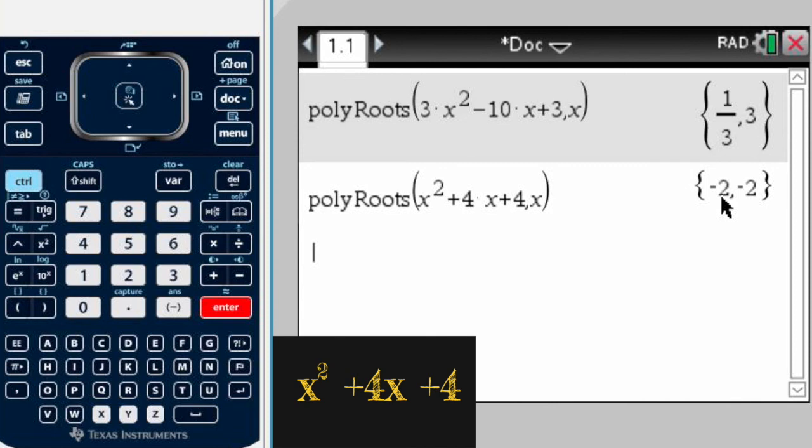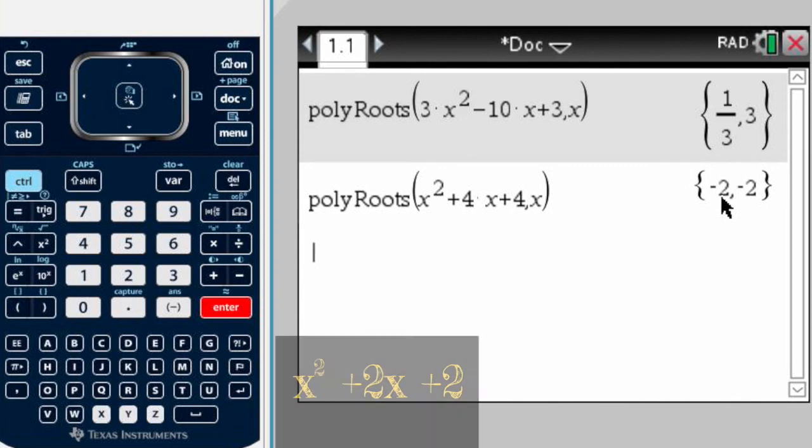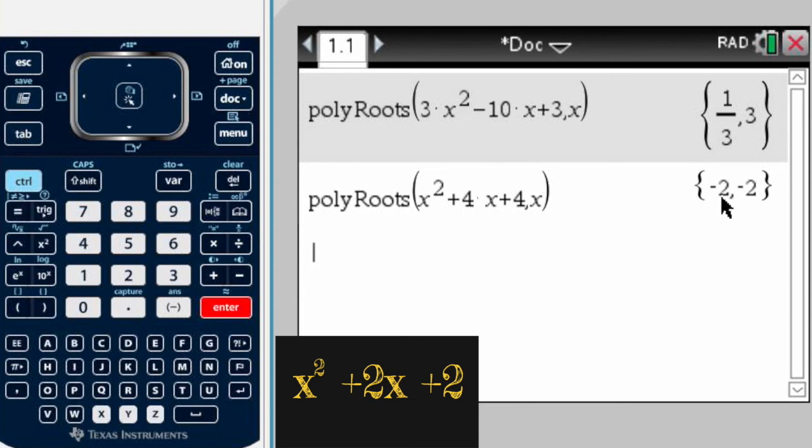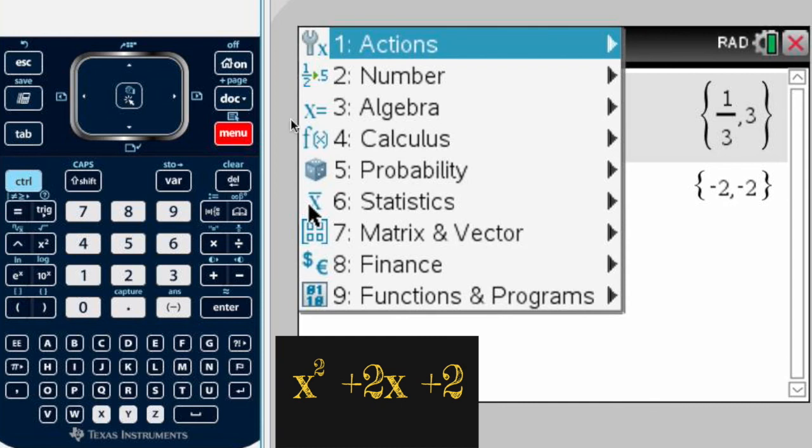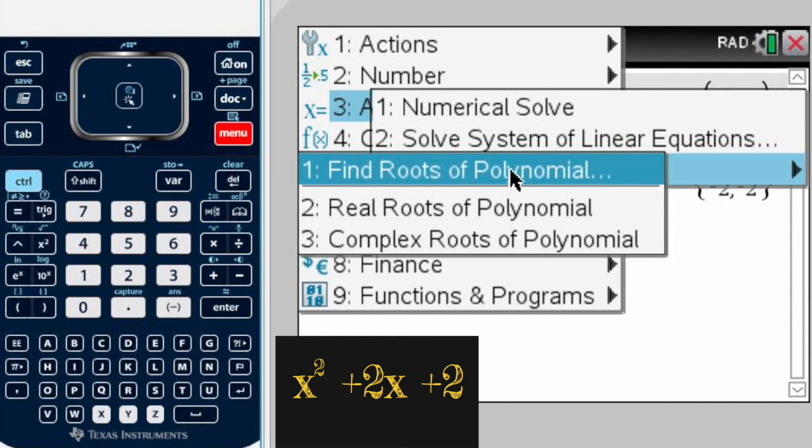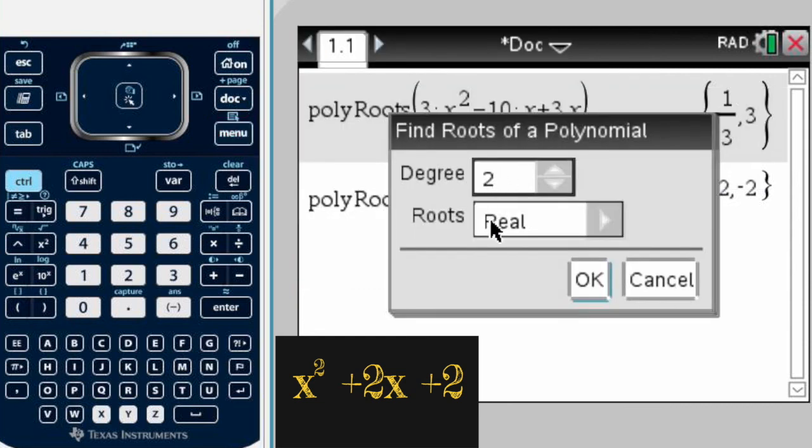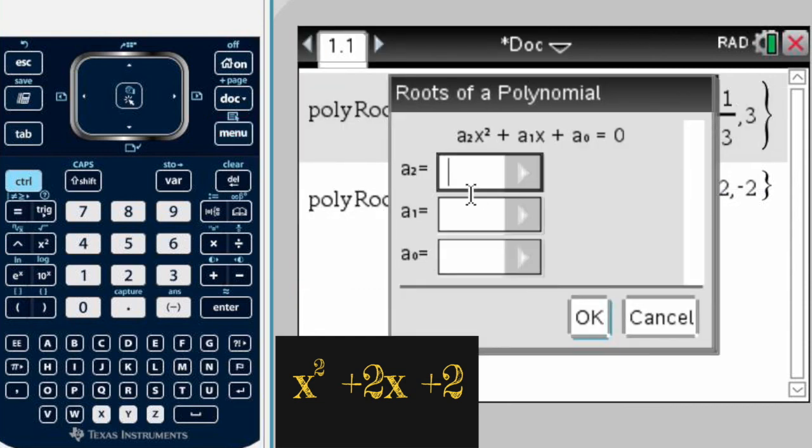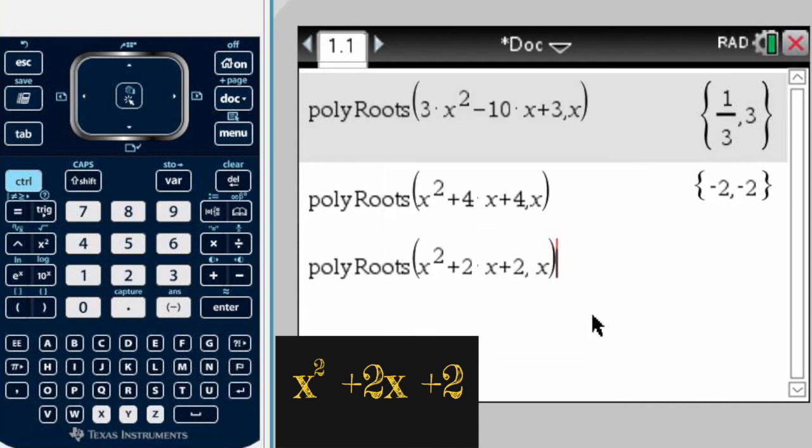I want to do one more example, a third example. This third example is x squared plus 2x plus 2. So again, menu, algebra, polynomial tools, find roots of polynomials, second degree, roots are real, OK. In this case again, the coefficient for x squared is 1, the coefficient for x is 2, and my constant is 2 as well. So I'm going to put OK and press enter.